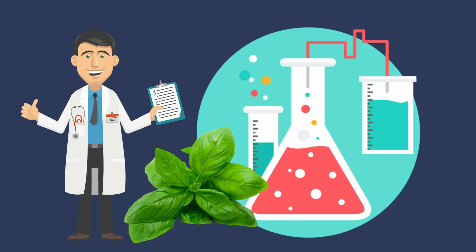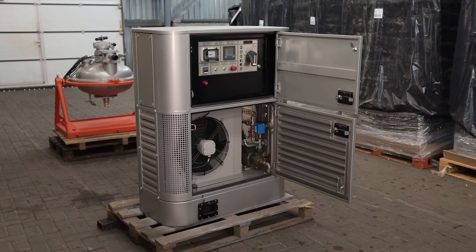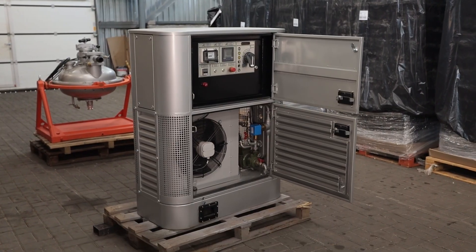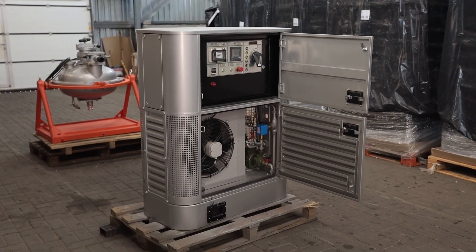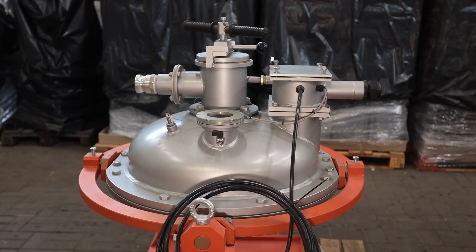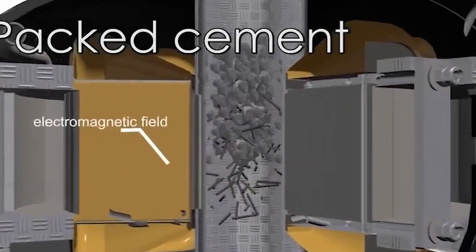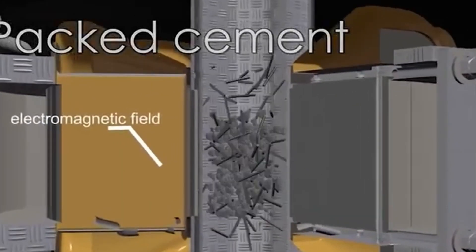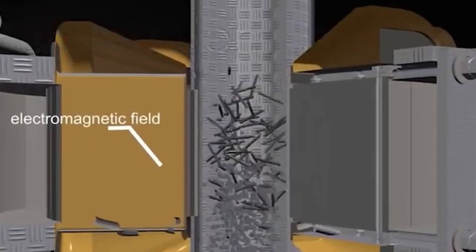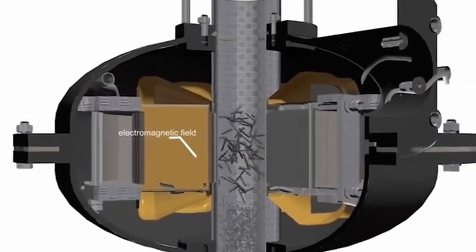The Vortex Layer Device consists of an inductor of a rotating electromagnetic field, a working chamber made of non-magnetic material, and ferromagnetic particles. When voltage is applied to the inductor winding, ferromagnetic particles begin to move in the working chamber, constantly coming into contact with the walls, with each other, and with particles of the processed plant material.